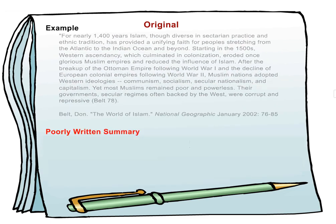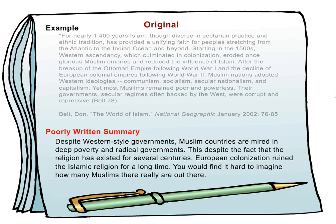Poorly written summary: Despite Western-style governments, Muslim countries are mired in deep poverty and radical governments. This despite the fact that the religion has existed for several centuries. European colonization ruined the Islamic religion for a long time. You would find it hard to imagine how many Muslims there really are out there.